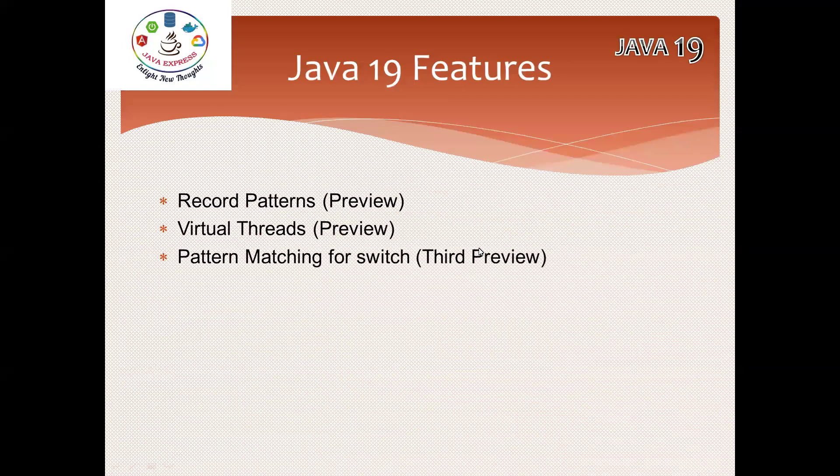In Java 19 we have record patterns — this is a preview feature — virtual threads, another feature, and pattern matching for switch. From version 16 onwards, across the last two to three versions, pattern matching has been in preview state. These three are preview features, so if you directly install Java 19, they will not work.